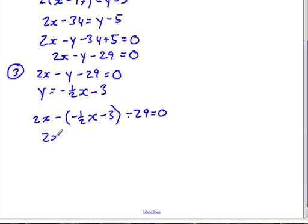So this is 2x, and we're going to distribute the negative sign through the bracket. So this is plus 1 half x plus 3 minus 29 is equal to 0. And 2x plus 1 half x, now remember 2 is equal to 4 over 2, so if we're going to add this together, then this becomes 2 and a half x, or 5 over 2x.